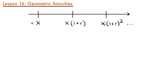This is represented on our timeline. We have our first payment of x, and then one payment period later that payment increases to x times (1 + r), where r is the rate of inflation or the rate at which the payment changes per payment period. In another payment period, we have x times (1 + r) squared, and that continues — cubed, to the fourth power, fifth power, and so on until those payments are done.